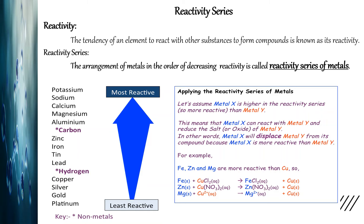Vice versa — if we take iron sulfate plus copper, copper will not be able to displace iron from its solution and hence the reaction will not take place. Why? Because copper is placed below iron in the reactivity series.